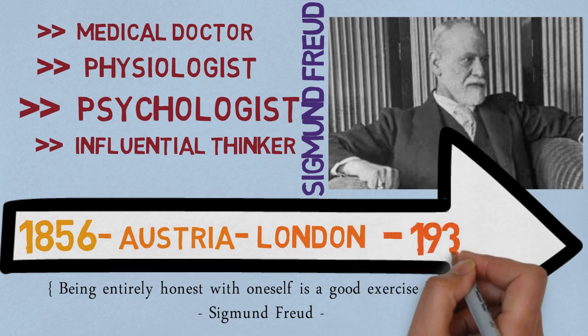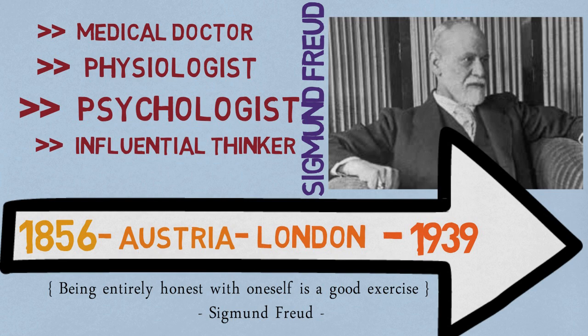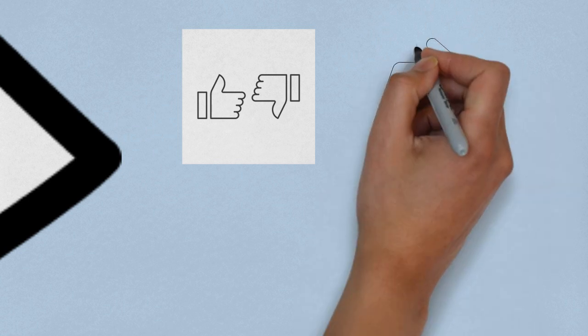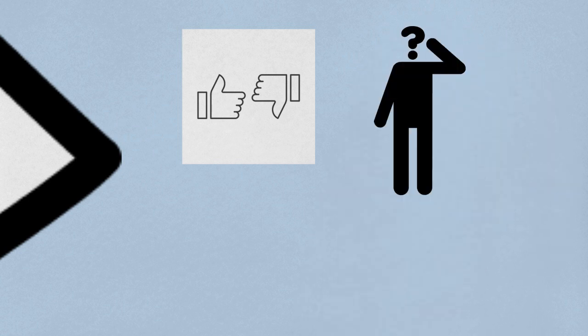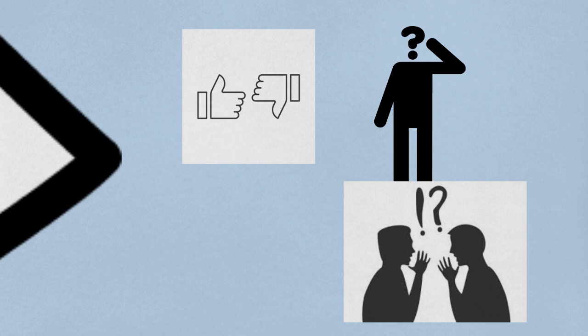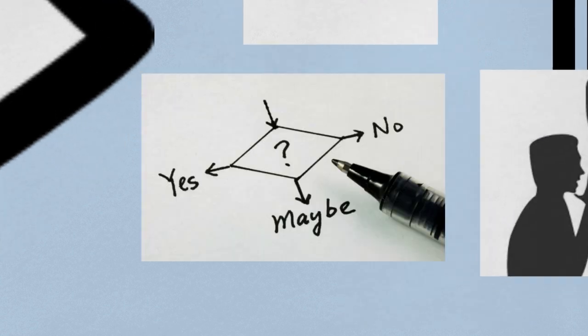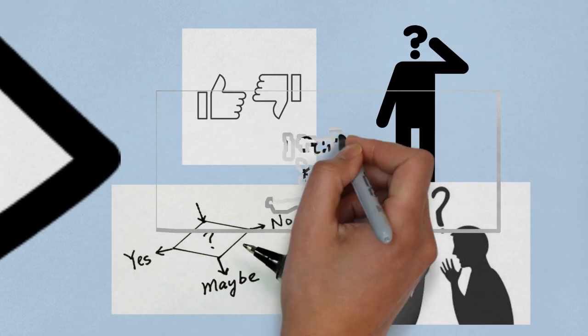So have you ever liked somebody or disliked them and not know why? Have you ever forgotten somebody's name at exactly the wrong time? Have you ever found yourself in a situation where you are doing something or arguing for something or making a decision for reasons that you can't fully articulate? Have you ever called out the wrong name in the throes of passion? This is all the Freudian unconscious.